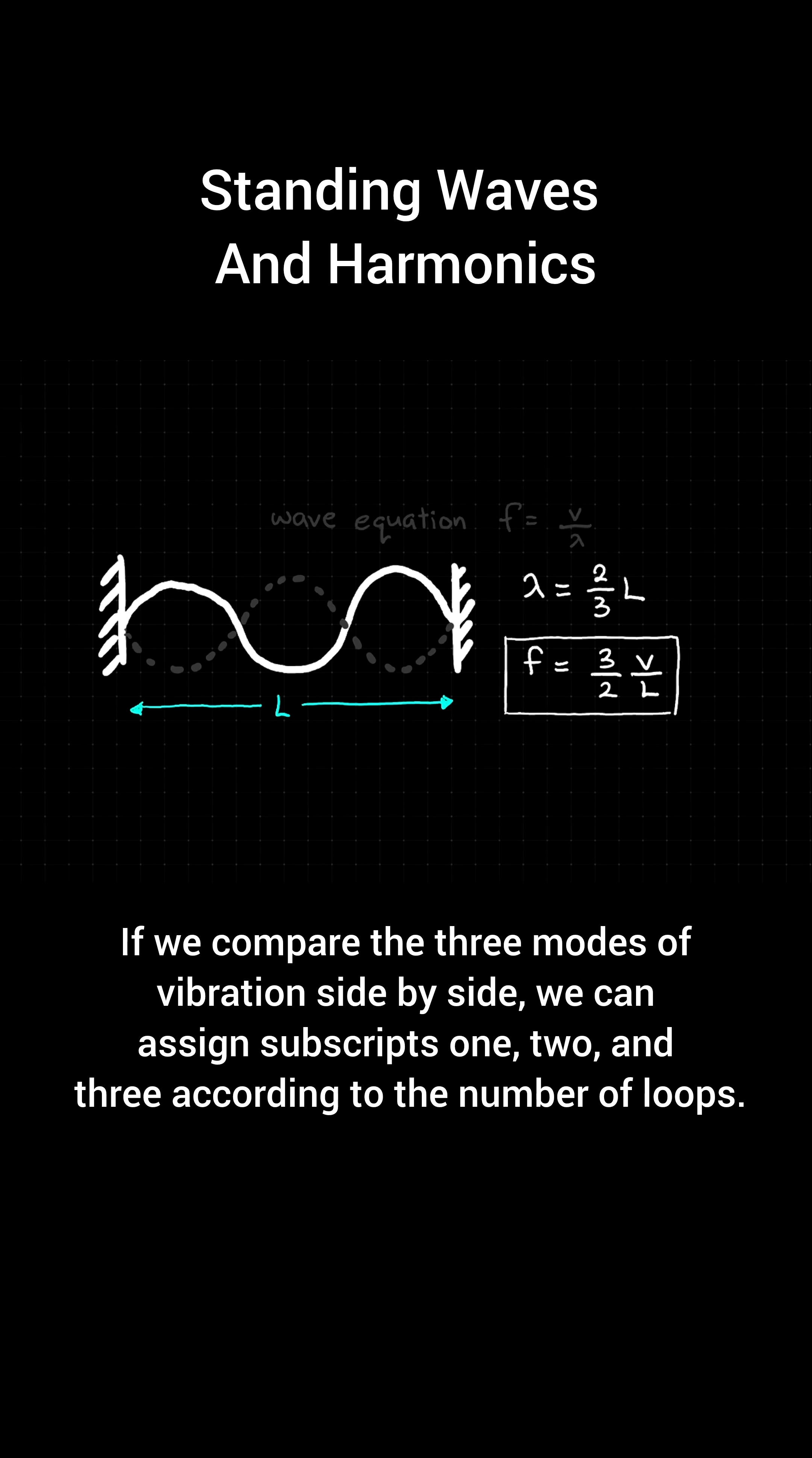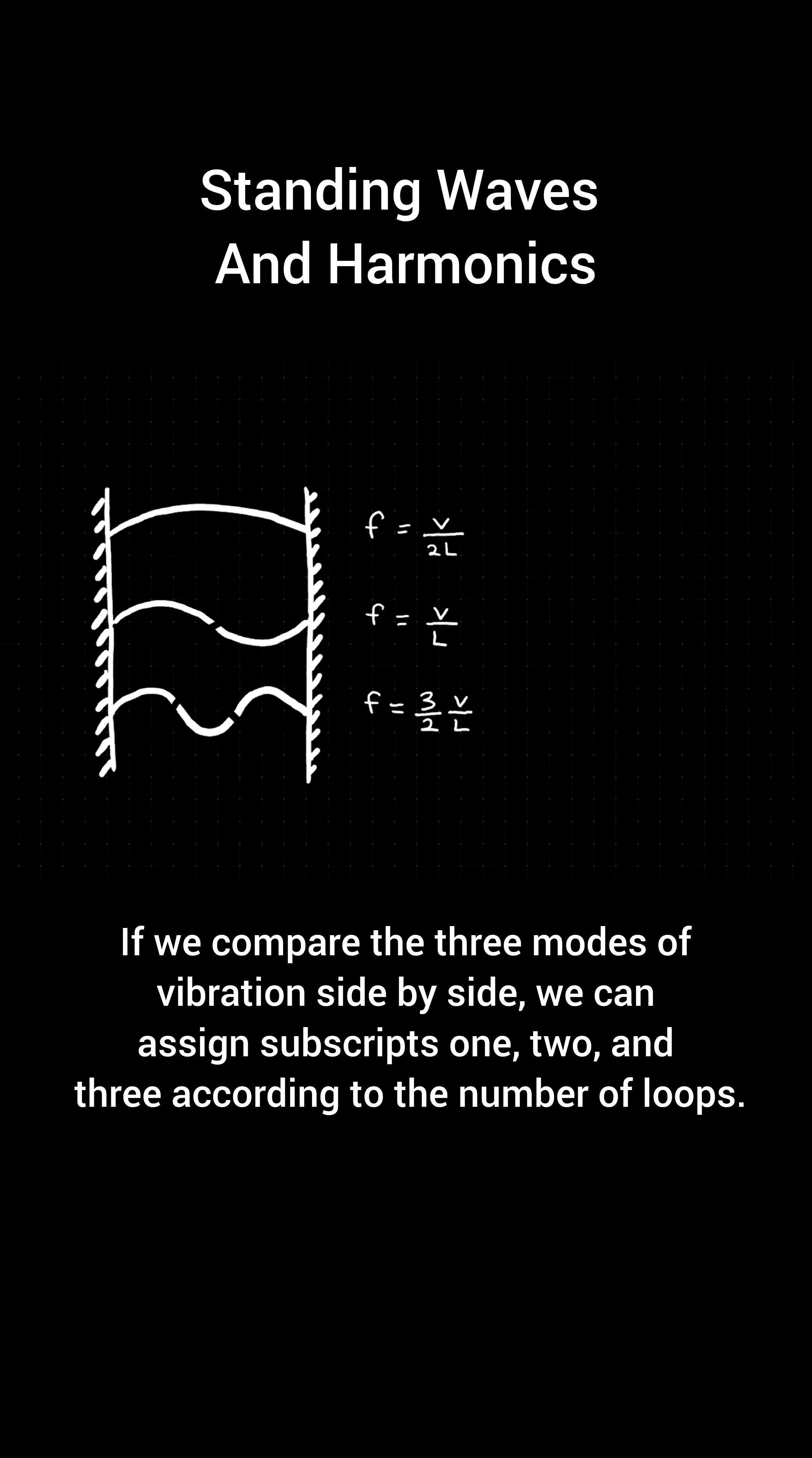We begin to see a pattern. If we compare the three modes of vibration side by side, we can assign subscripts 1, 2, and 3 according to the number of loops.